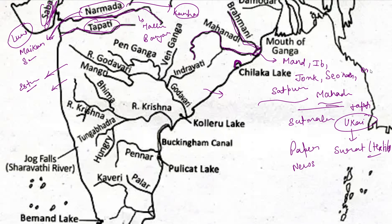The tributaries of Mahanadi include Ong and Tel on one side. The right-bank tributaries are Mahanadi, Hasdev, Eib, and Sevanath, while Ong, Tel, and Junk are left-bank tributaries. The drainage basin of Mahanadi is mainly covered in Maharashtra — approximately 36,000 square kilometres.